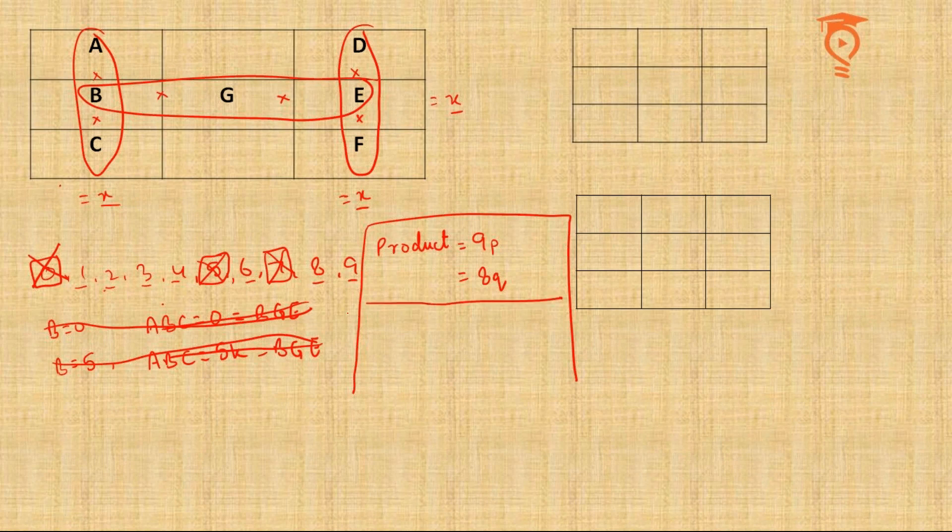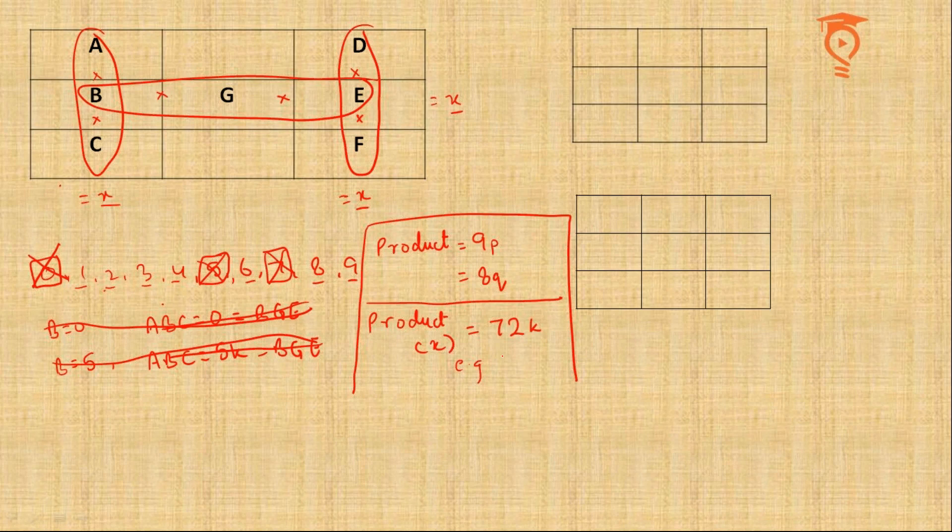A multiple of 72: 72, 144, 216, 288. Now how do I figure out which one of them is going to be my product? 72 that's for sure.